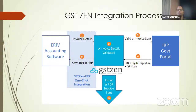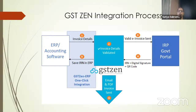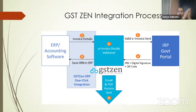Let's look at e-invoice generation through GST Zen. Here is a high-level schematic picture. On the left you have your ERP accounting software. The details from your ERP go into GST Zen's validator, either on your premises or our server. If there are any errors, they get thrown back to you. If the data is valid, GST Zen sends it to the IRP — the government portal — and receives the IRN, the digital signature, and the QR code, then saves the data back in your ERP. You can replace GST Zen with any software — this is what any e-invoicing module is supposed to do.